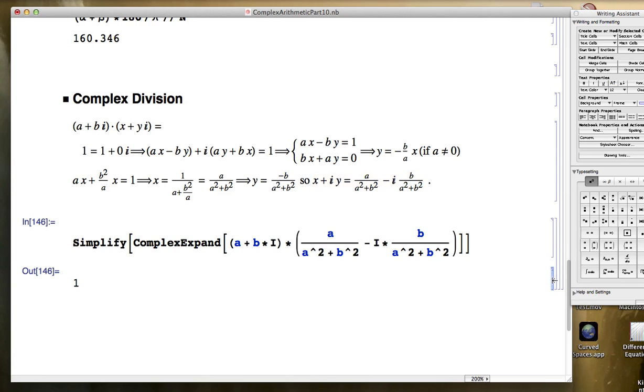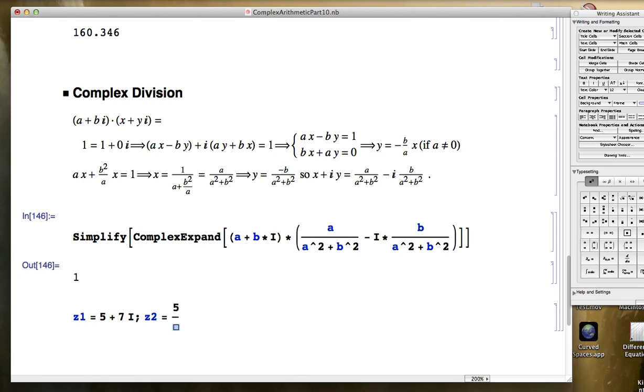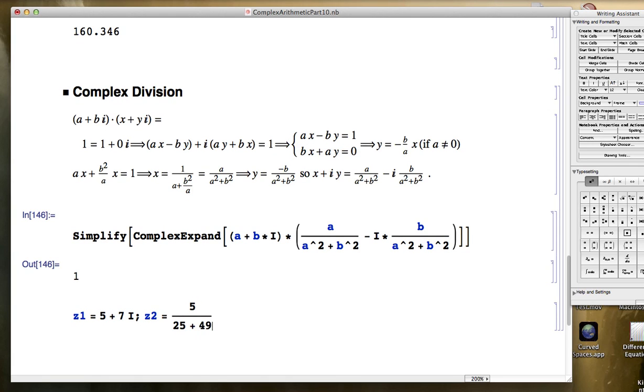So, it looks like what we've done here will work in general. So, for example, if I want to find the multiplicative inverse of the complex number, I'll call it z, 5 plus 7i. Let's call that z1. Evidently, by this formula, it's going to be 5 over (5 squared plus 7 squared), 25 plus 49, which will be 74, minus i times 7 over 74.